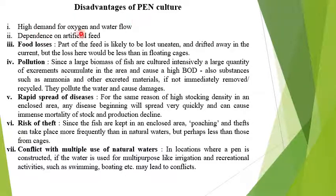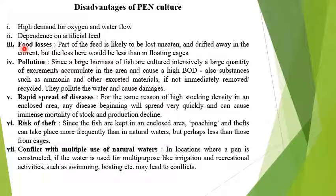Disadvantages of pen culture: high demand for oxygen and water flow; dependence on artificial feed that must be provided continuously; food losses occur as uneaten feed drifts away with the water current; pollution is a concern because large biomass cultured intensively accumulates high biological oxygen demand (BOD), generating ammonia and other excreted material that must be removed or recycled, otherwise the culture becomes polluted and fish will die.